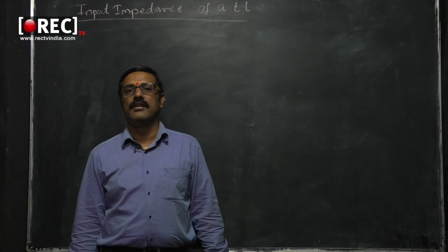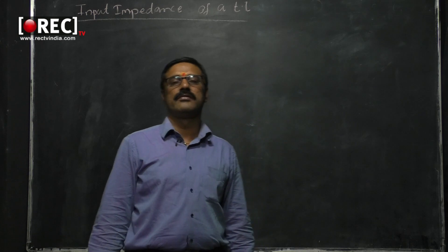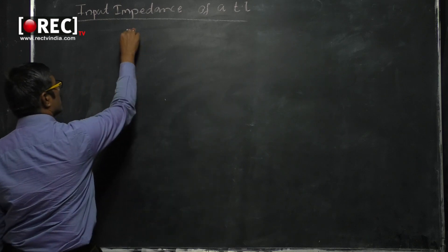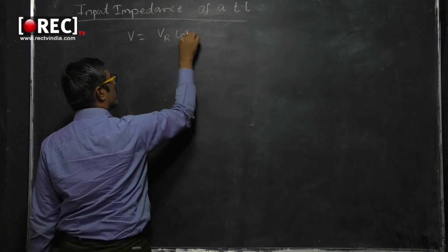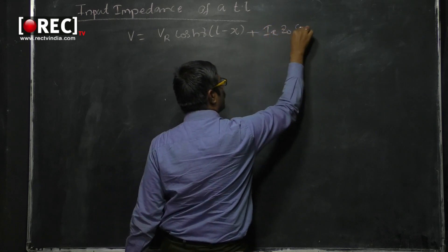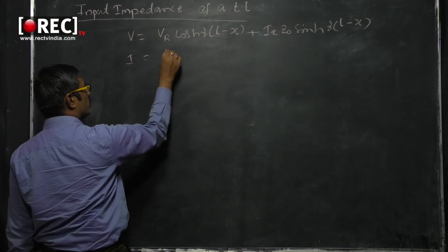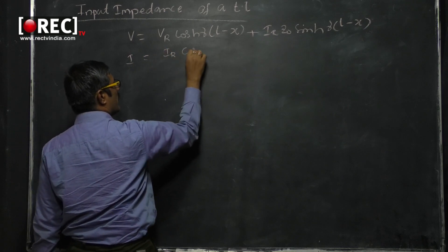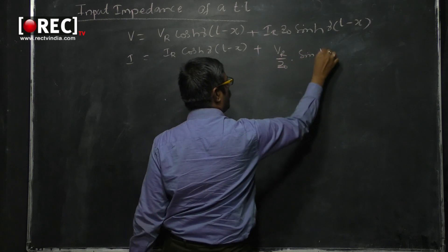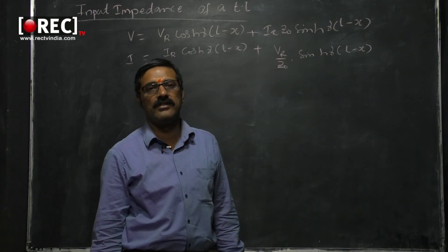In the previous video sessions I have derived the transmission line equations in terms of the receiver parameters. Recapping those equations: V equals VR cosh(γ(l−x)) plus IR·Z₀ sinh(γ(l−x)), and I equals IR cosh(γ(l−x)) plus VR/Z₀ sinh(γ(l−x)). These are the transmission line equations in terms of receiver parameters.